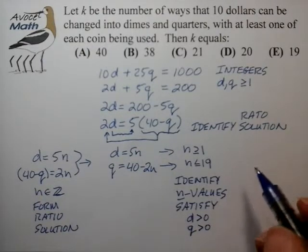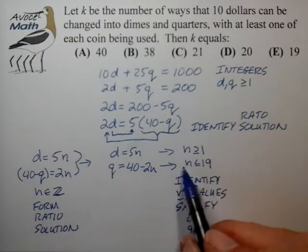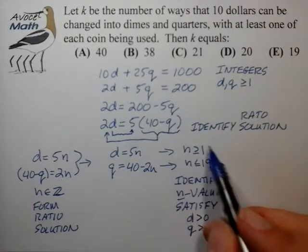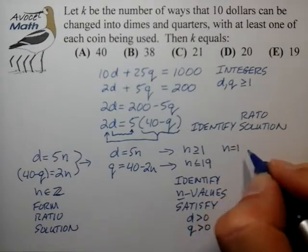Then the last step is pretty easy. We just have to basically look at the set of n which satisfies both the first condition and the second condition. From this case it's pretty easy to see that the n values we're looking for is n equal to 1, 2, 3.